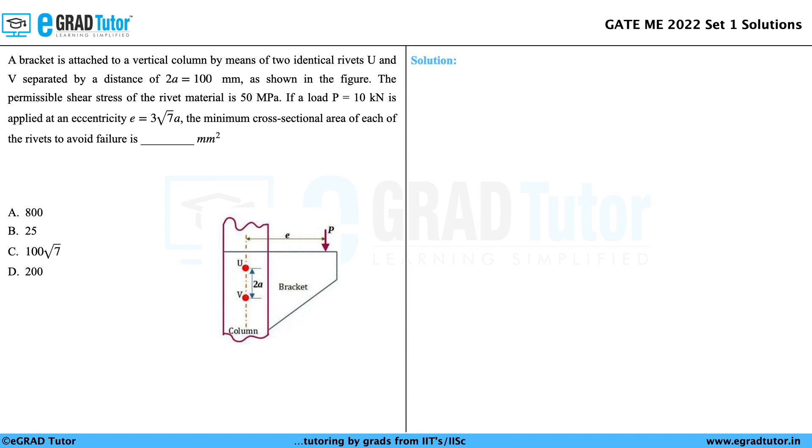We have four options given along with the orientation and configuration of the rivets. Let's look at the solution. We are given 2A = 100 mm, eccentricity E = 3√7A, and load P = 10 kN.